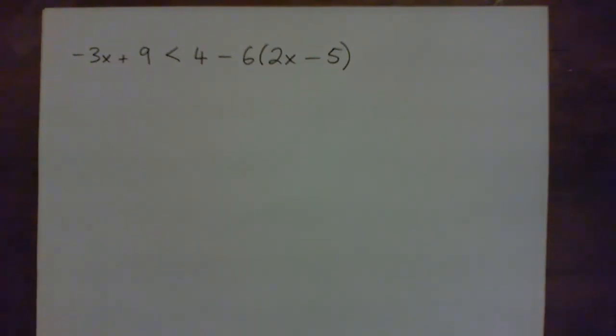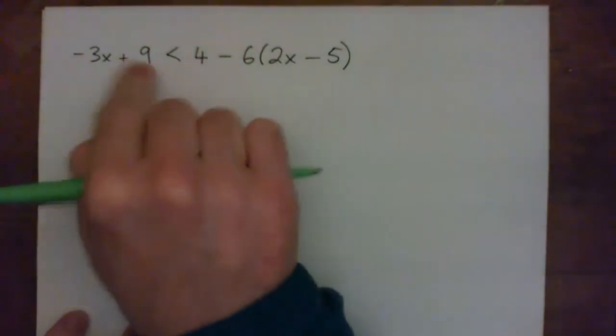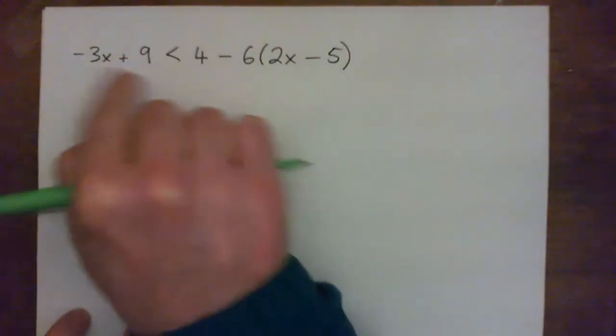Hi everybody, in this video we're going to solve this inequality for x. So the first thing we do, like any inequality or equation, is we simplify both sides as much as we can. Now looking on the left, there's no operations to do, and these are not like terms, so we can't add them together.